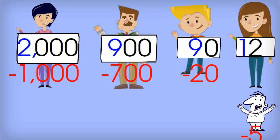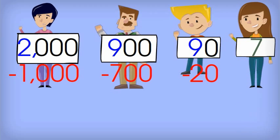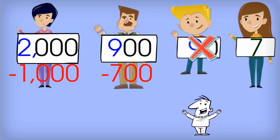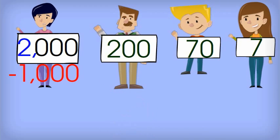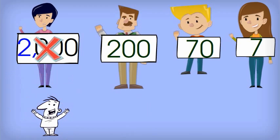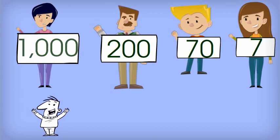So Olivia pays Bill $5, leaving her with $7. Ted pays Bill $20, leaving him with $70. Hector pays Bill $700, leaving him with $200. And Thelma pays Bill $1,000, leaving her with another $1,000.